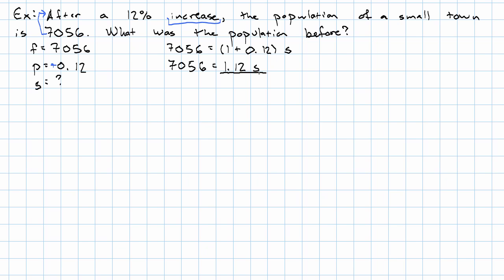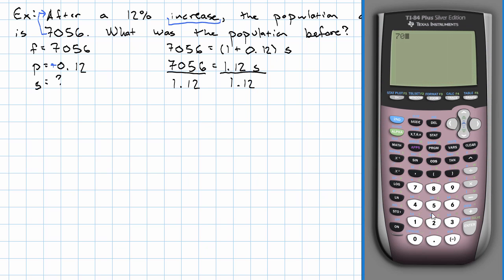We'll divide both sides by 1.12. 7,056 divided by 1.12 gives us 6,300.